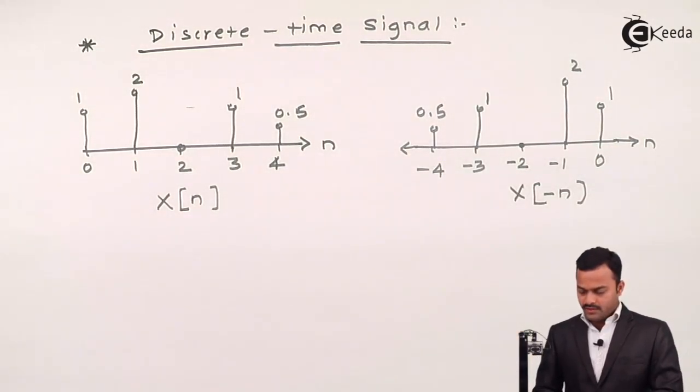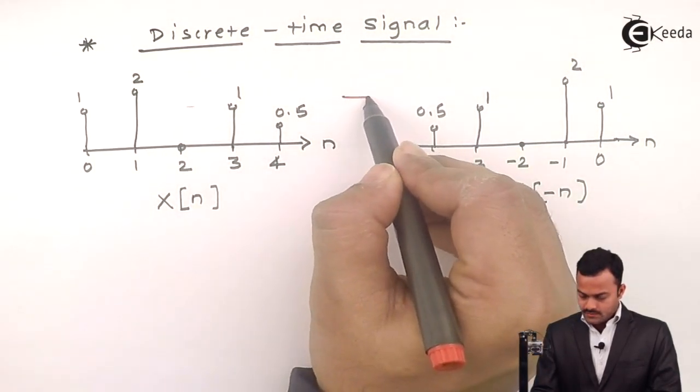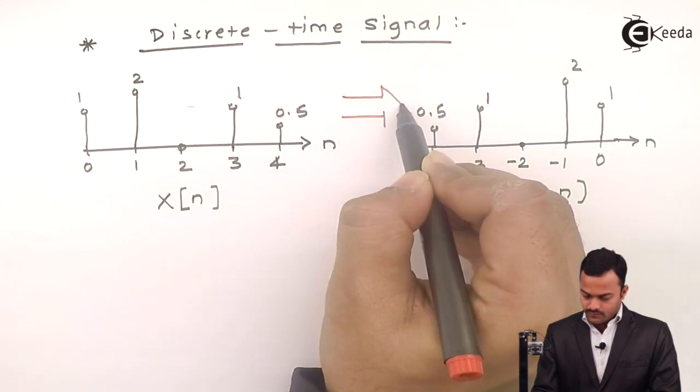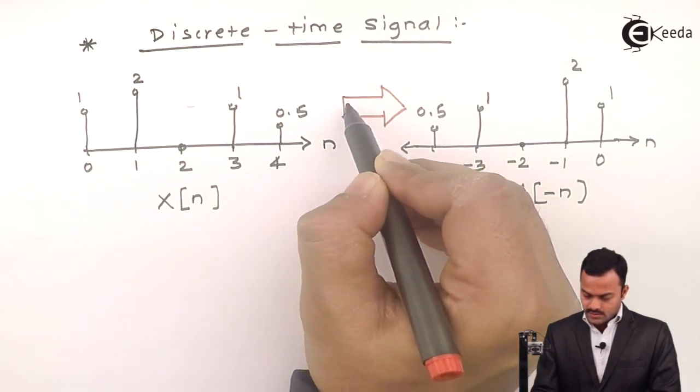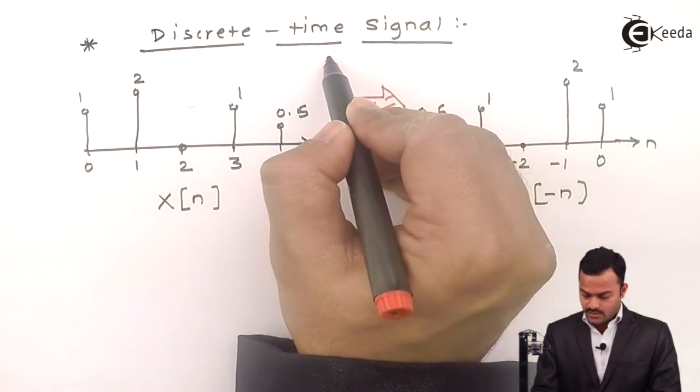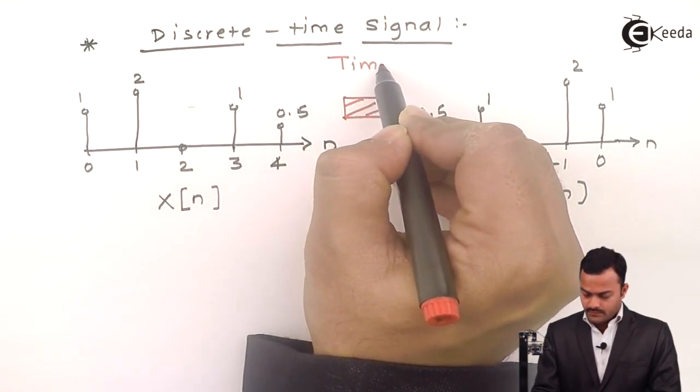So, what we have done over here, original signal x of n was given, we obtained x of minus n, just by taking mirror image of x of n, which we call as time reversal.